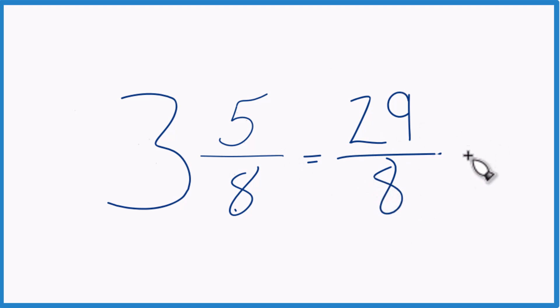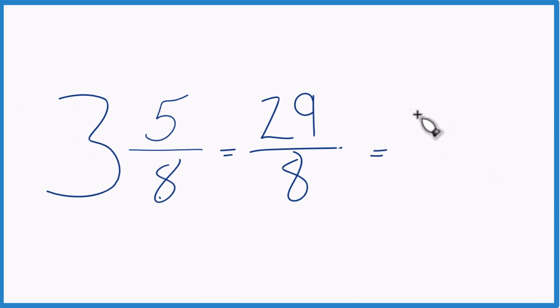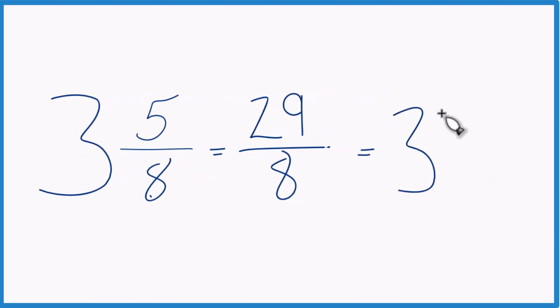We can even check our work here because 8 goes into 29. See, 3 times? 3 times 8 is 24 with 5 left over. Bring the 8 across. And we get the same thing we started with.